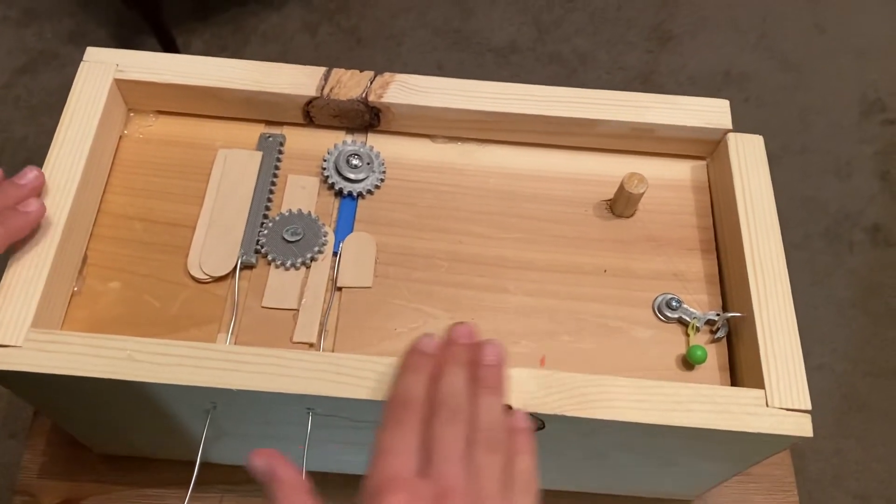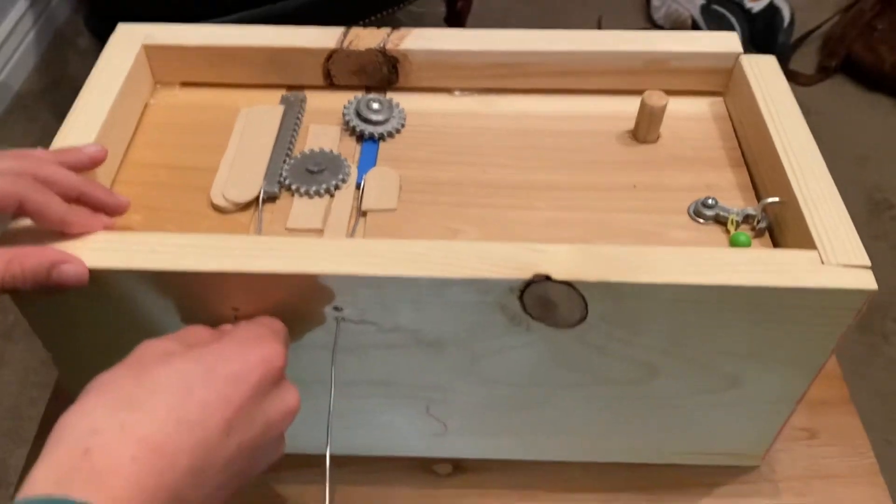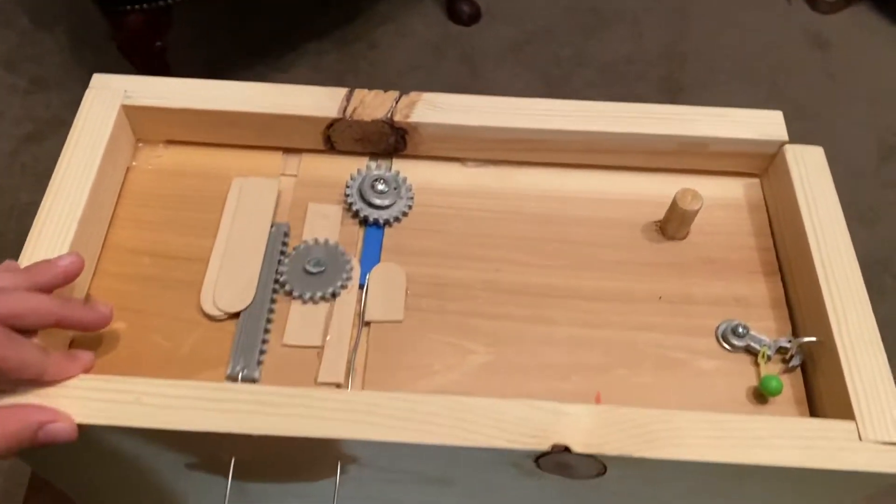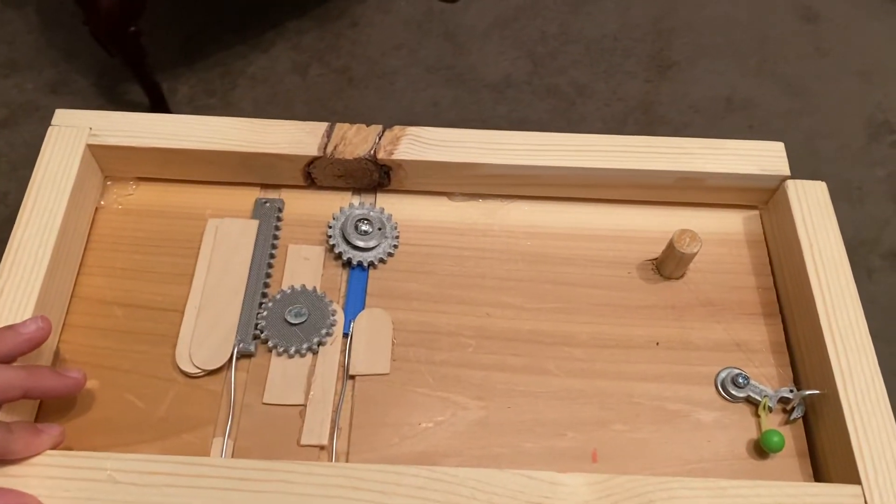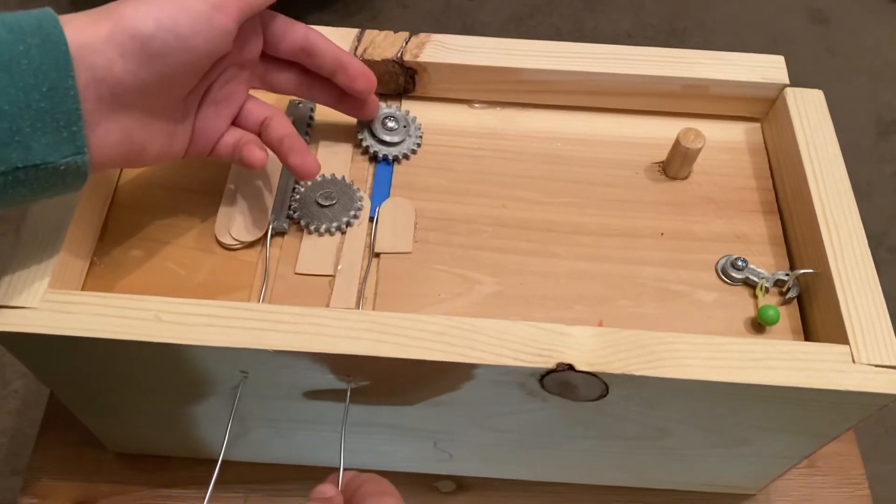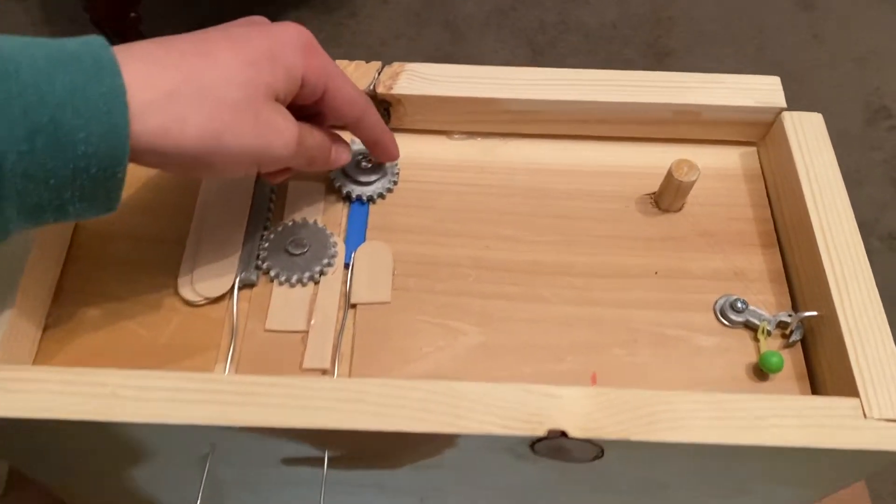books on the front, look like books on the front - and when you pull this, it does nothing first because it's just spinning that gear. But this is another gear with a spool, and the spool is connected